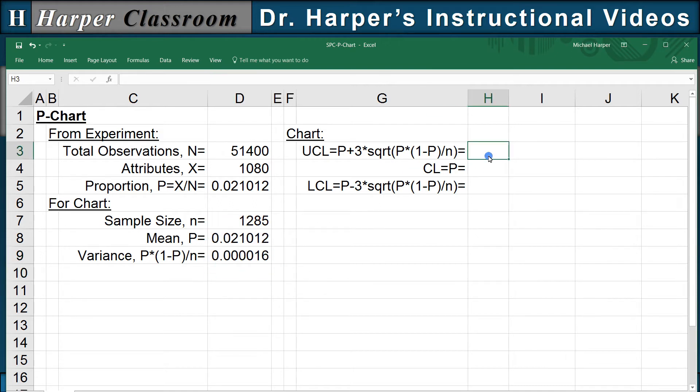So for our upper control limit, that's going to equal our mean plus 3 times the square root of the variance, which is our standard deviation.